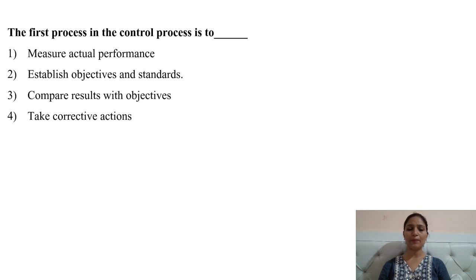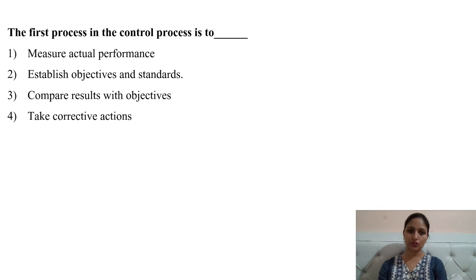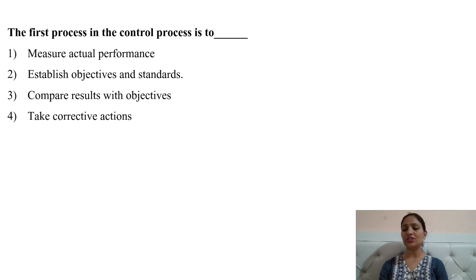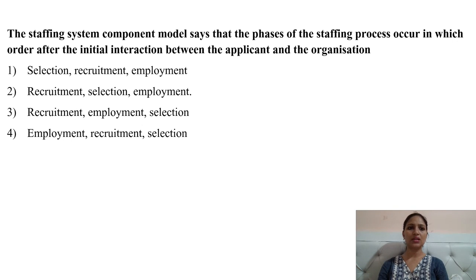Next question: the first process in the control process is to — options are: measure actual performance, establish objectives and standards, compare results with objectives, or take corrective actions. Option two, establish objectives and standards, would be the right answer. The first phase is to establish objectives and set standards.